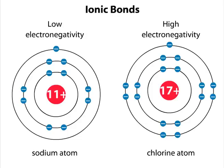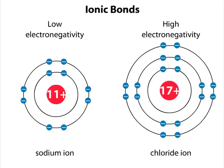Because sodium has a low electronegativity, it holds its outer electron very loosely and easily loses it to chlorine. When this happens, chlorine fills its outer shell with eight electrons, becoming negatively charged. Sodium loses its electron and becomes positively charged.